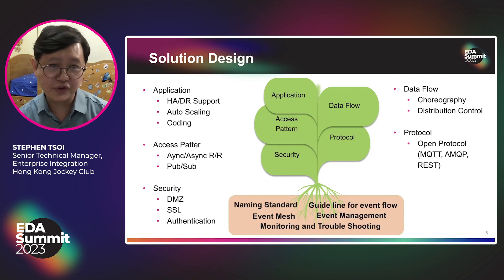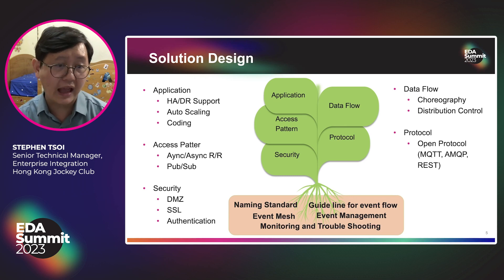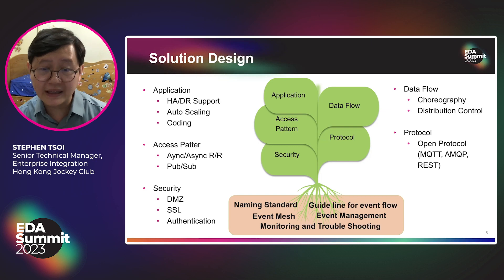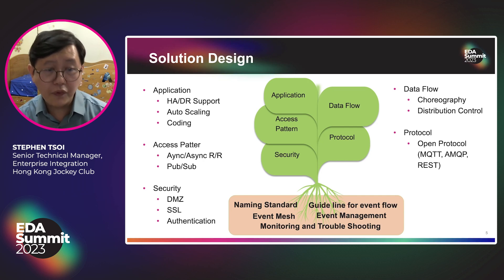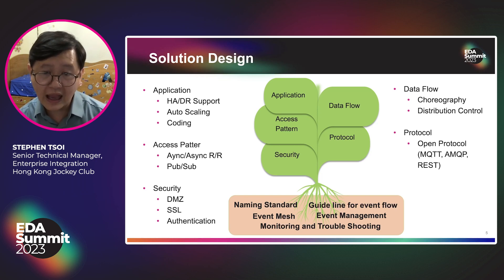There are three preconditions before you design your first EDA solution. First is infrastructure — whether it is a standalone event bus or a well-defined event mesh covering both public cloud and on-premise. Second is an event portal for event management. The last one is a monitoring and troubleshooting solution, which must be integrated with your organization's existing solution. After your environment fulfills these preconditions, you can proceed into your detailed solution design. First, you need to fully understand the whole application design, including the data flow, and set a corresponding event bus configuration for it.